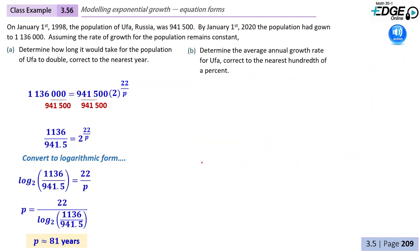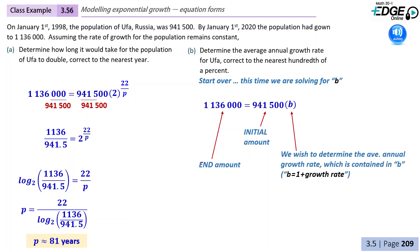Next, let's determine the average annual growth rate of Ufa, correct to the nearest hundredth of a percent. So the way we'll solve this one will be to start over and then this time solve for B. So we still have our end amount and our initial amount. But now we're going to solve for B, which you can think of as 1 plus the growth rate, which is perfect because we're looking for the growth rate.